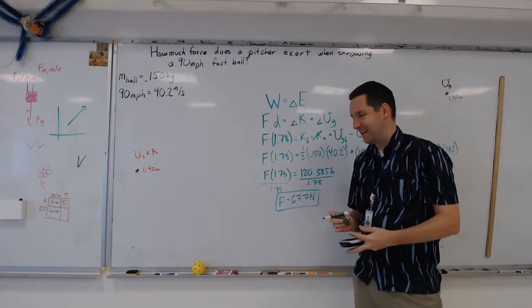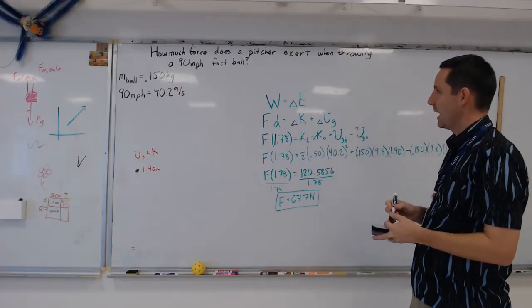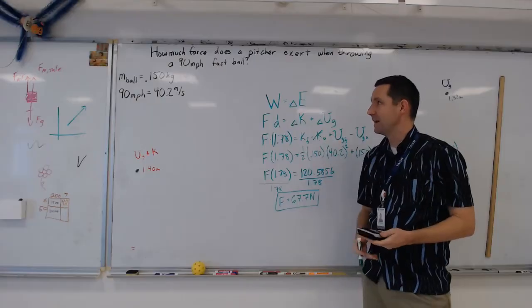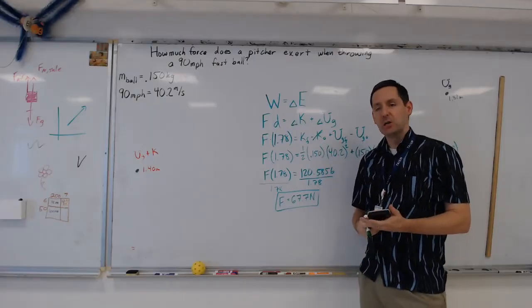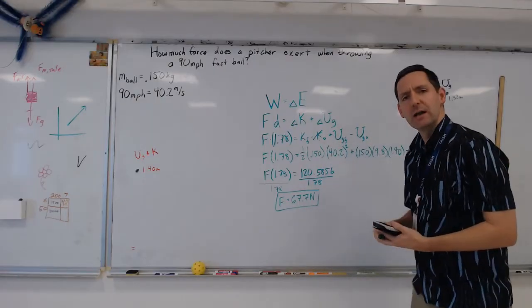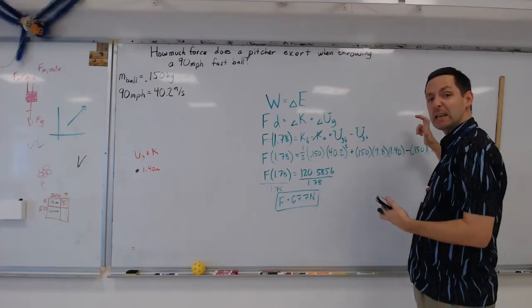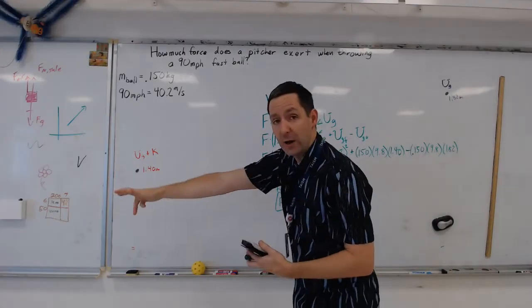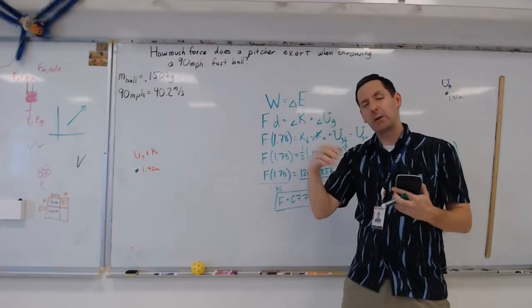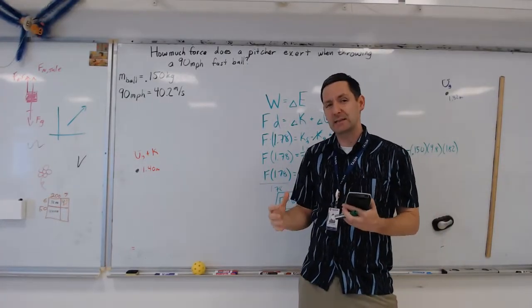How about that? We're able to estimate how much force is required for a pitcher to throw a 90-mile-per-hour fastball. You may say, that's not a lot of force. Well, you have to continue exerting that same force all the way from here all the way to the end. So that's a long distance to be able to continue exerting exactly that same force.